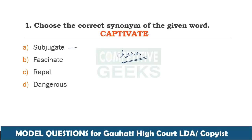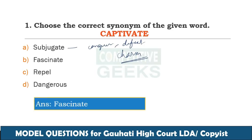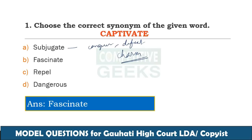Subjugate means conquer, defeat, crush. Fascinate means captivate. Repel means the opposite of attract. So the correct answer is fascinate.